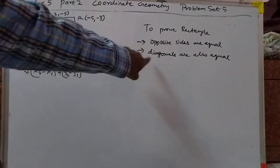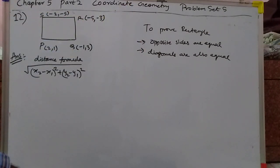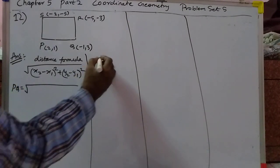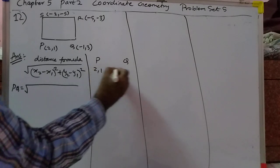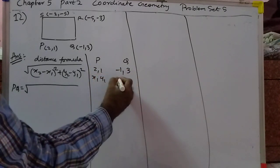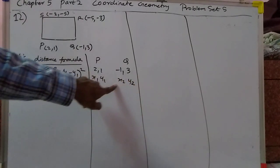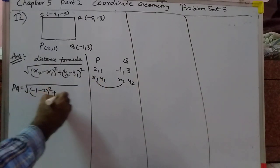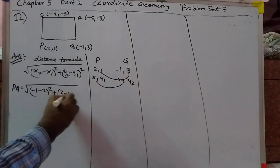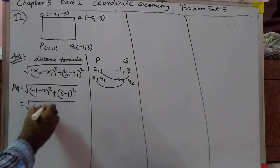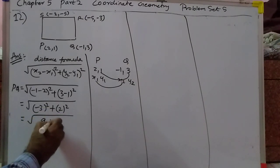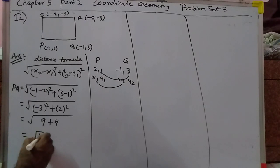Opposite sides are equal and diagonals are also equal. We use the distance formula. First, let us calculate PQ. That will become minus 3 whole square plus 2 whole square — that will become 9 plus 4, so that is root 13.